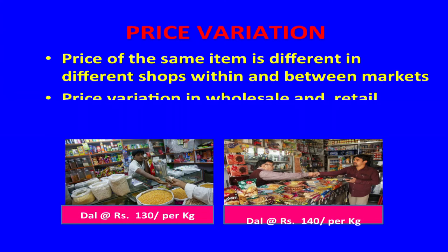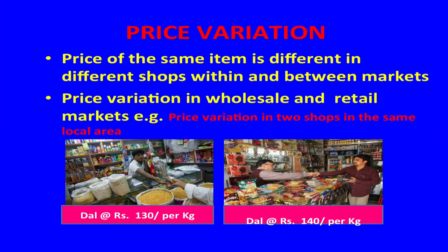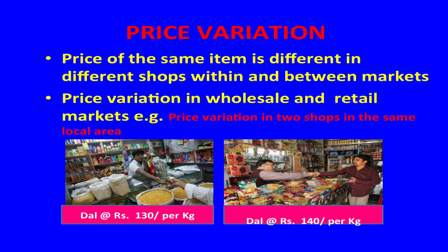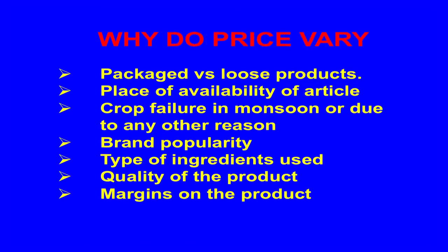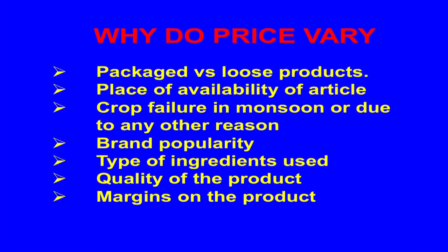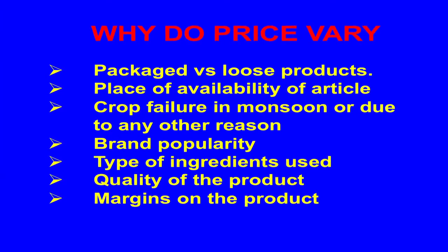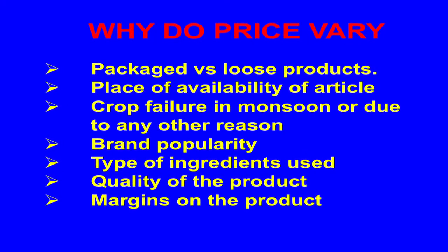The same item has different prices in different shops within and between the market. Price variation is there in wholesale as well as in retail markets. Price variation exists in two shops in the same local area. For example, 1 kg dal at one store is available at rupees 130 per kg and at another store it is available at 150 per kg.